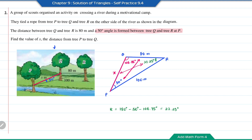Now, using the sine rule: X over sine 23.25 degrees equals 80 over sine 50 degrees. Therefore, X equals 80 over sine 50 degrees, times sine 23.25 degrees.